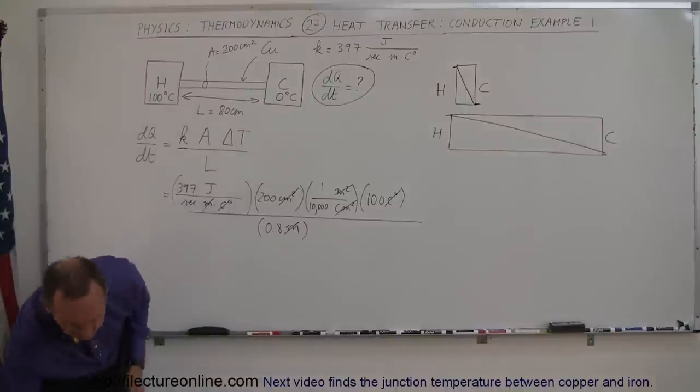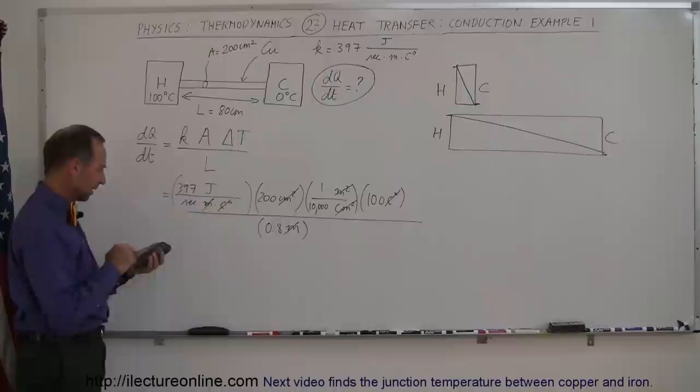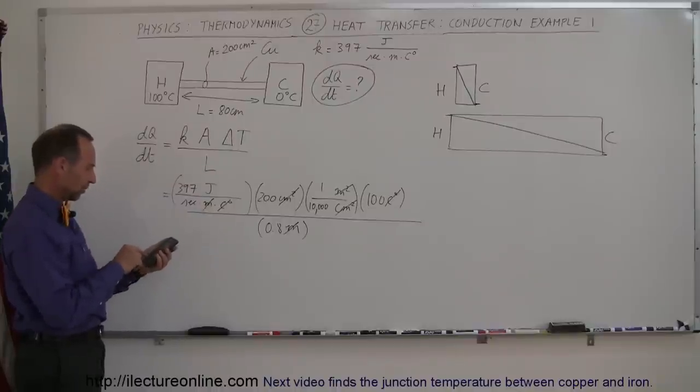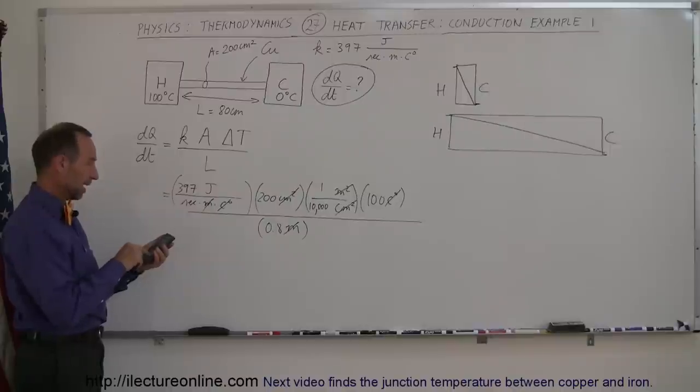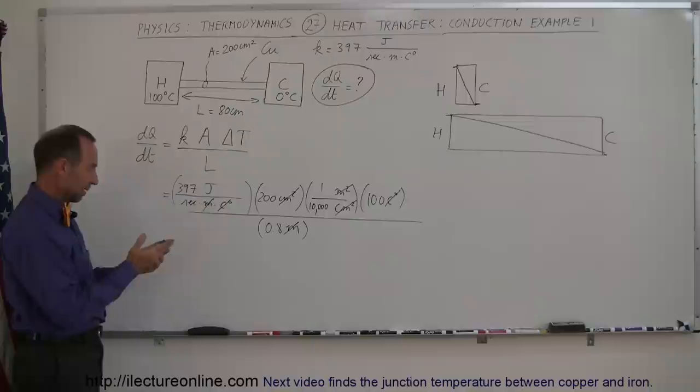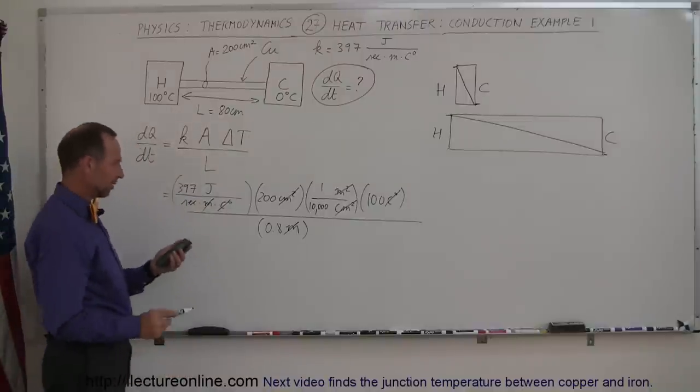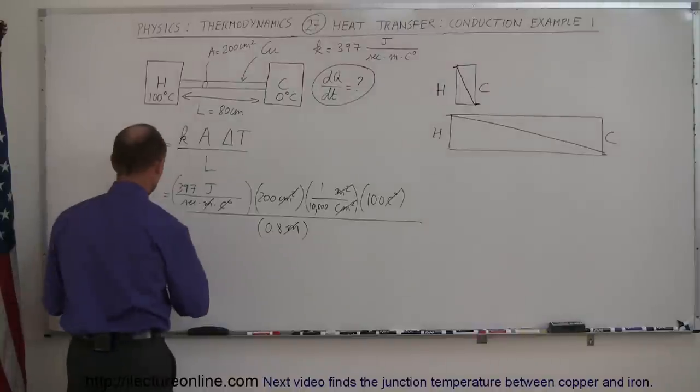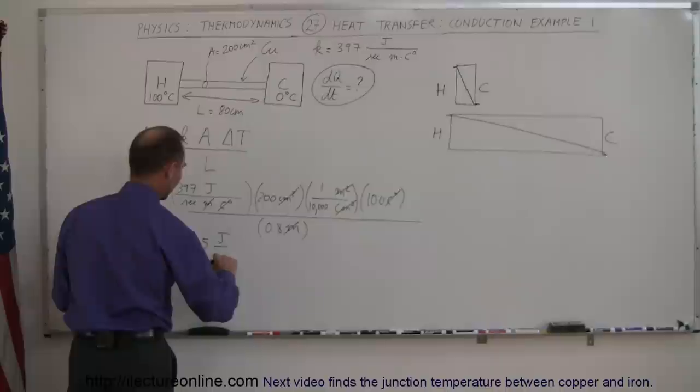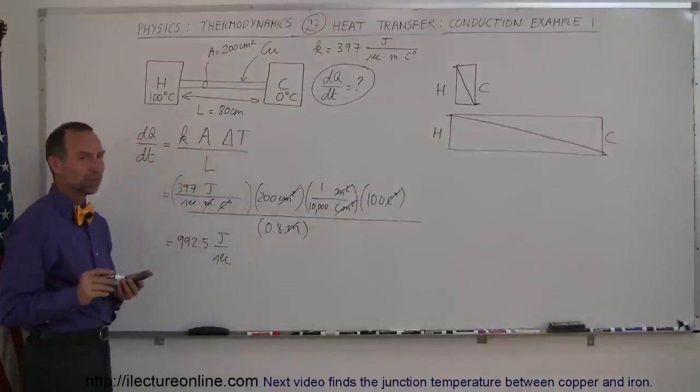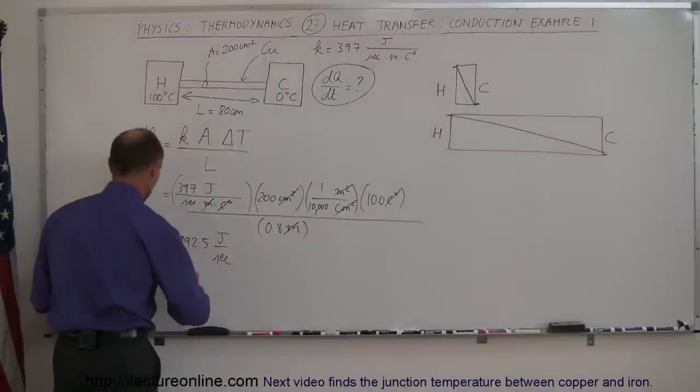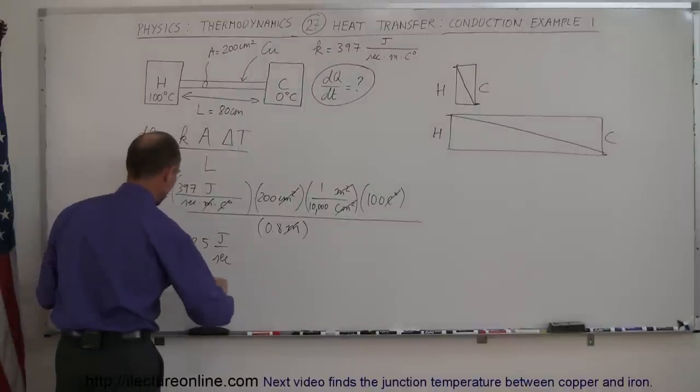So I need my calculator. Here it is, and let's find out what the amount of heat transfer is per unit time. So 397 times 200 divided by 10,000. Multiply times 100 divided by 0.8 equals, and what do we get here? 992.5, so that's equal to 992.5 joules per second. And of course, joules per second is watts.